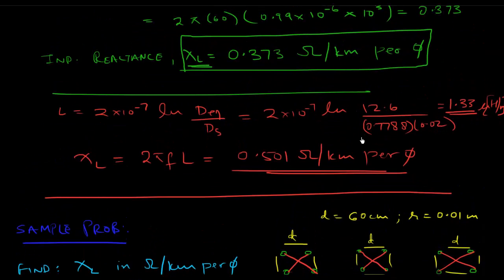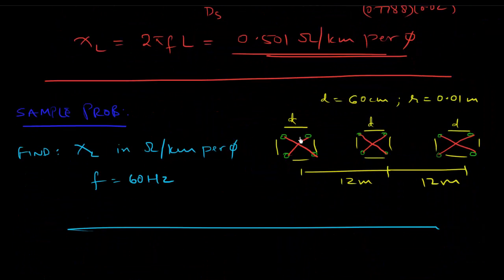Also, what I'll encourage you to do is again solve it imagining that it's not a bundled configuration - just single conductors. See what the difference is. The difference should be even greater than what we found here because this is a four bundle conductor for each of the three phases.